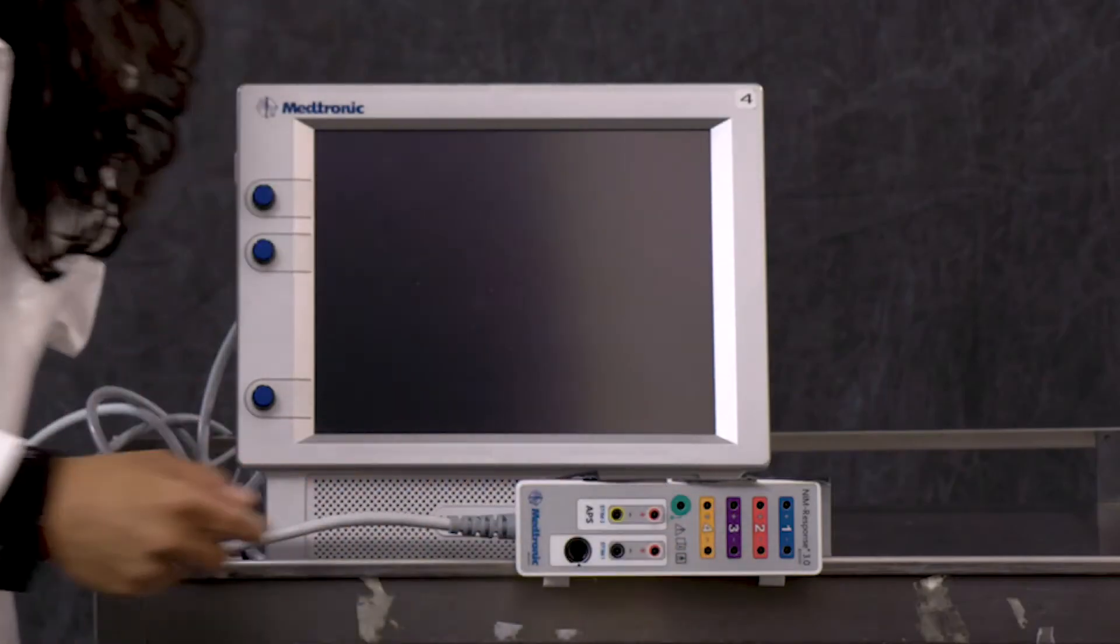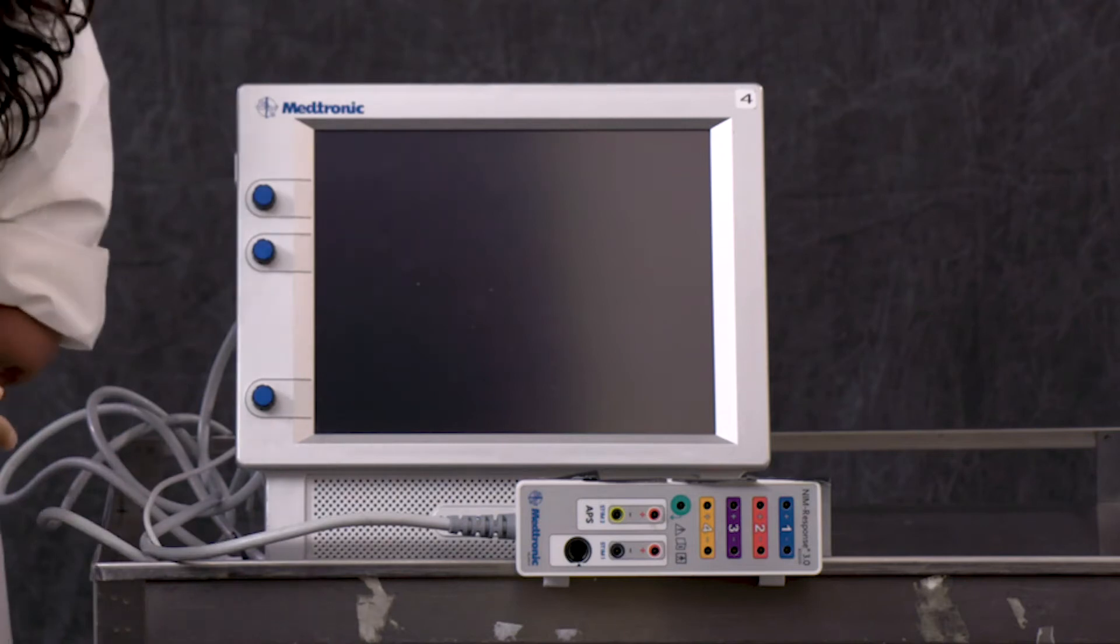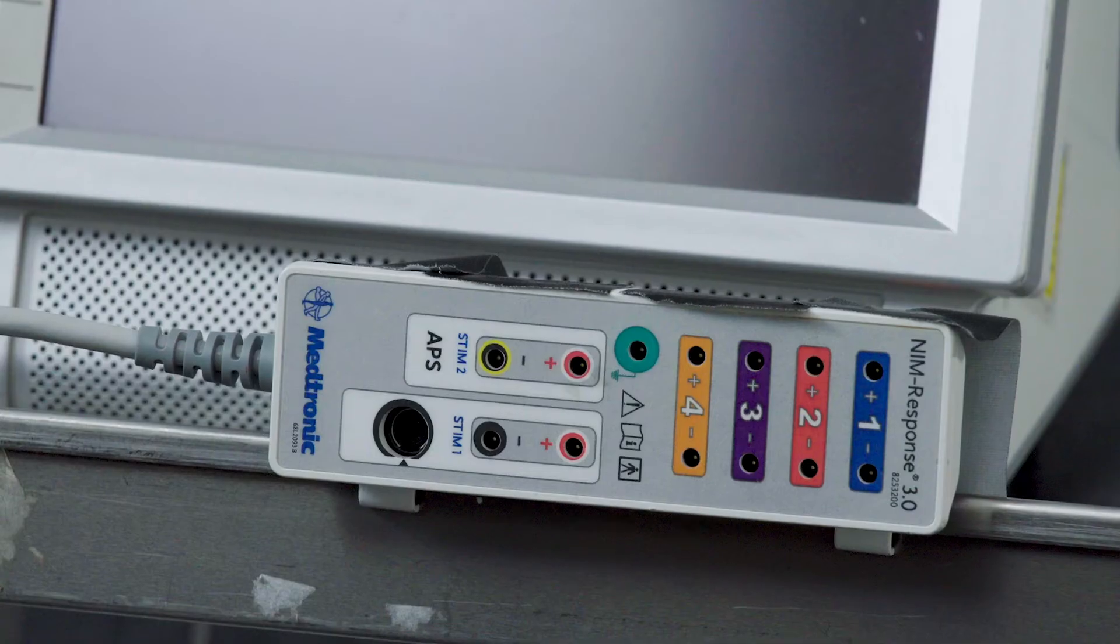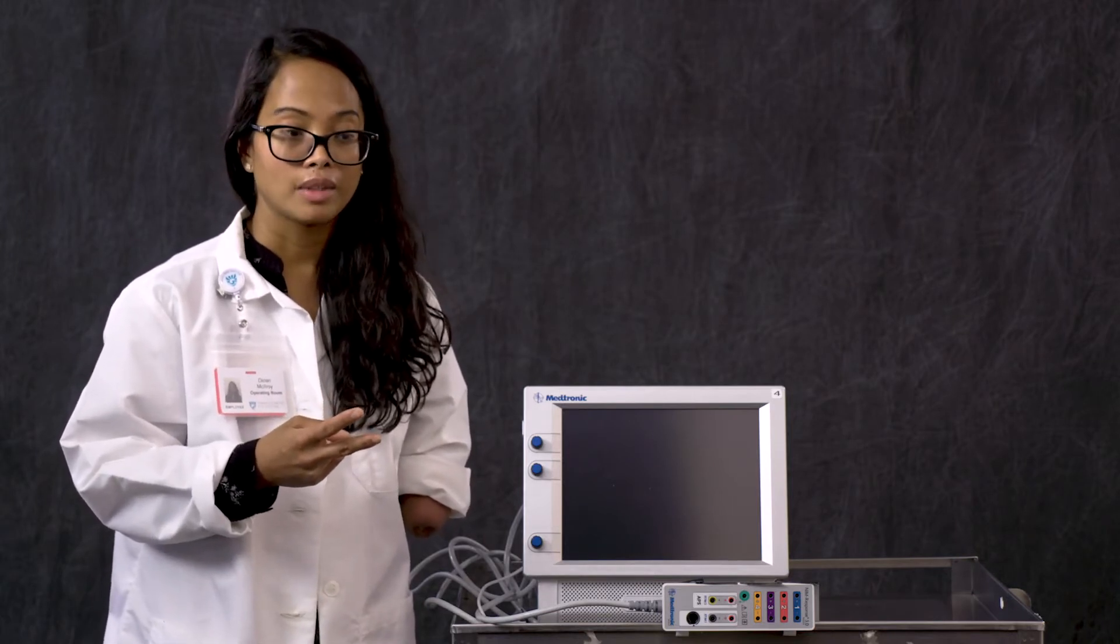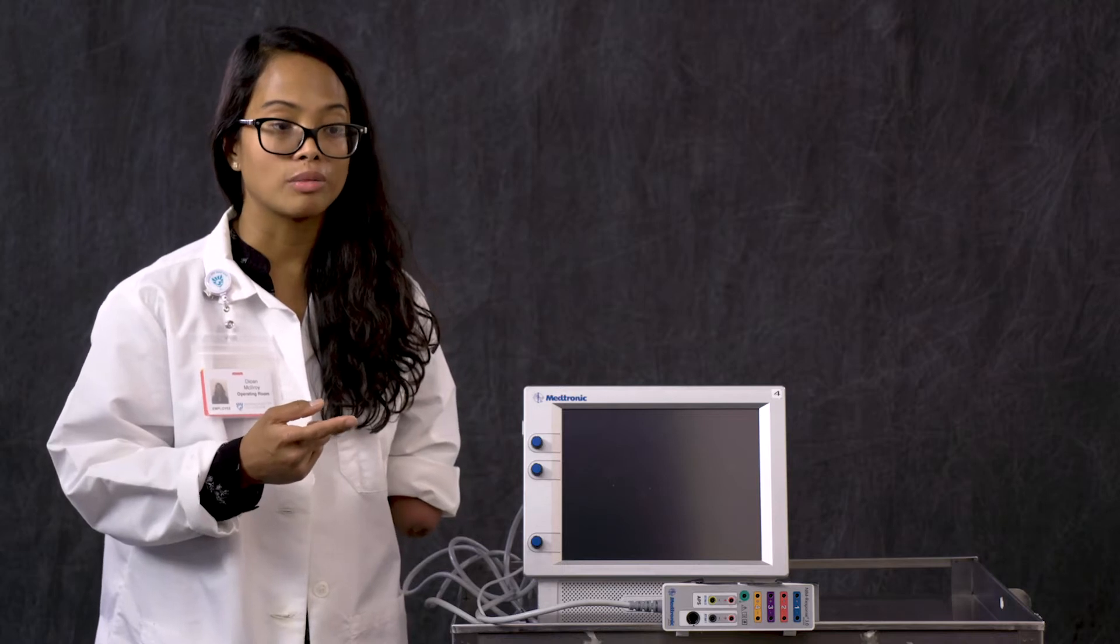The second channel is our hyostyloglossus channel, that's channel 2. We're going to also set up a third channel which would be our orbicularis oris channel. In the packaging, there's two sets of electrodes and one side-by-side bipolar that we're going to be using, all separate packaging.